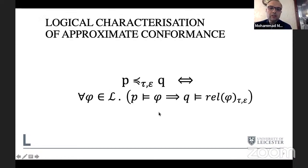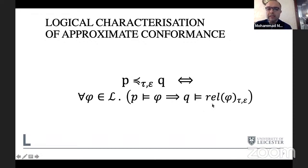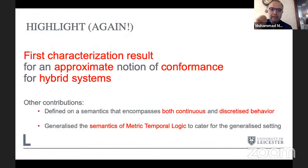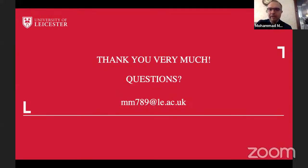The logical characterization theorem states: logic L characterizes tau-epsilon conformance whenever, for all formulas phi in L, if p satisfies phi then q satisfies a relaxed version of phi. The main contribution is defining the right relaxation that both reflects and preserves logical properties. In summary, this is believed to be the first logical characterization result for an approximate notion of conformance for hybrid systems, involving extensions to both the semantic domain and the semantics of metric temporal logic.